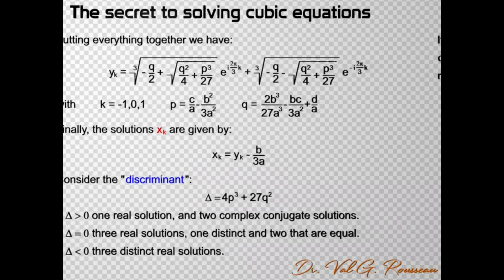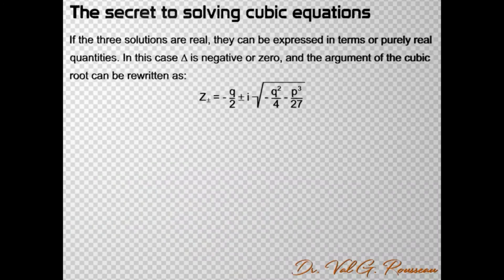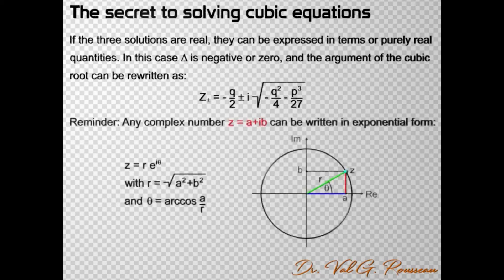For Δ negative or zero, we can switch the sign of the square root's argument and multiply it by the imaginary number i. This allows us to express z in complex algebraic form, that is, as a real part plus i times an imaginary part. Knowing z in algebraic form, it is now easy to express it in exponential form, that is, as a modulus times a phase factor by using the conversion formulas that result directly from the figure. This leads to the following expression for the exponential form of z±.